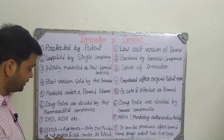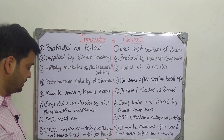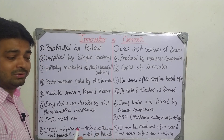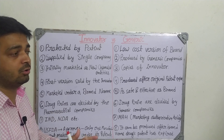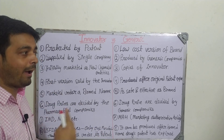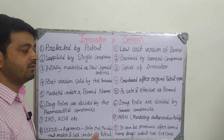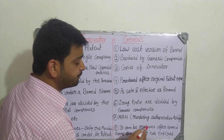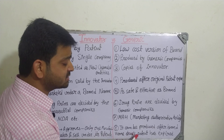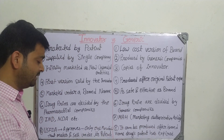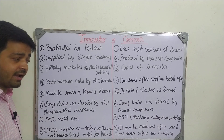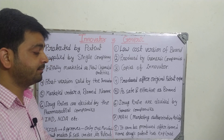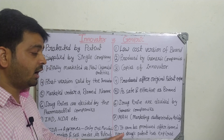Coming to the eighth point: under the innovator or branded drug, the US FDA approves only one manufacturer to make and sell under its patent. Only that one pharmaceutical company which developed the drug has the authority to manufacture and market it. Whereas for the generic drug, it can be produced after the brand-name drug's patent has expired. Even so, they still need to take approval from the FDA of their particular location and country before they can manufacture the patent-expired drug.